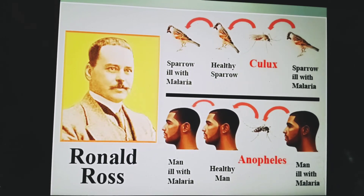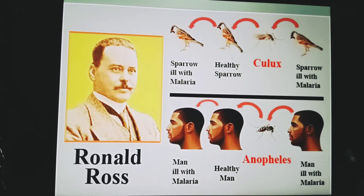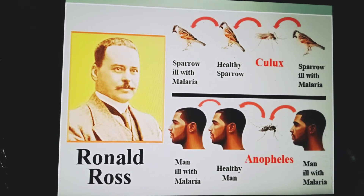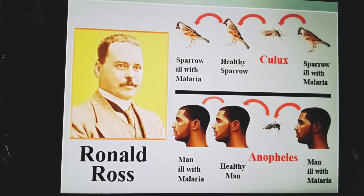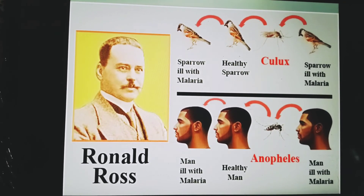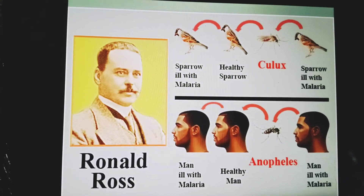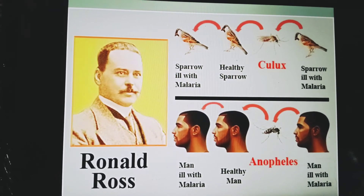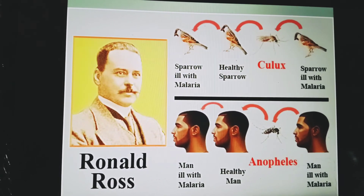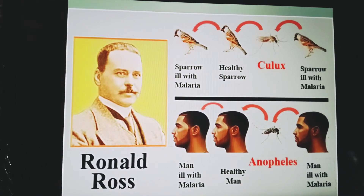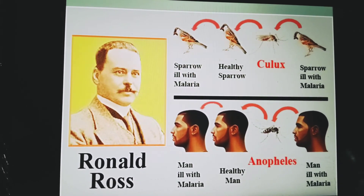In the end, the hypothesis was tested by direct experimentation on human beings. In 1898, Italian biologists allowed an Anopheles mosquito to bite a malarial patient. The mosquito was kept for a few days and then it was allowed to bite a healthy man. The person later became ill with malaria. In this way, it was confirmed that mosquitoes transmit plasmodium and spread malaria.